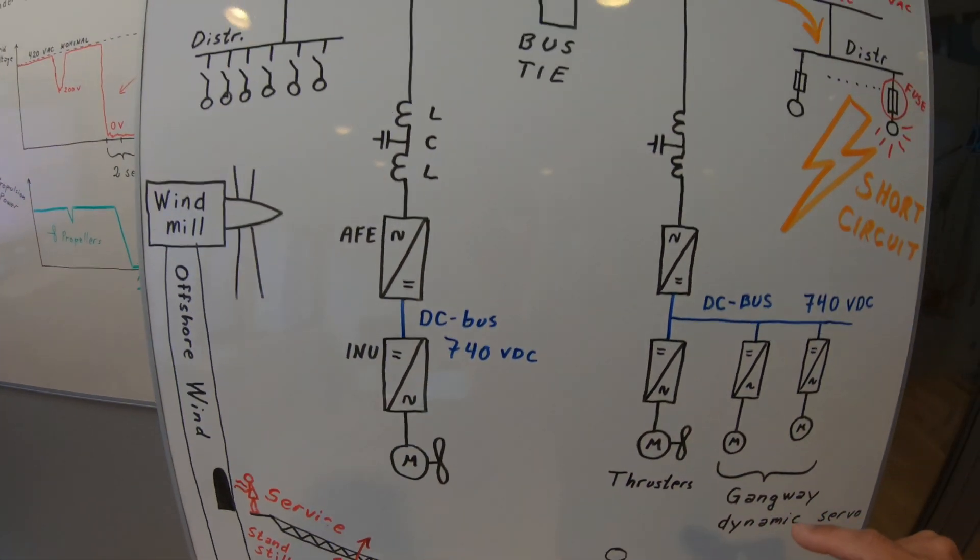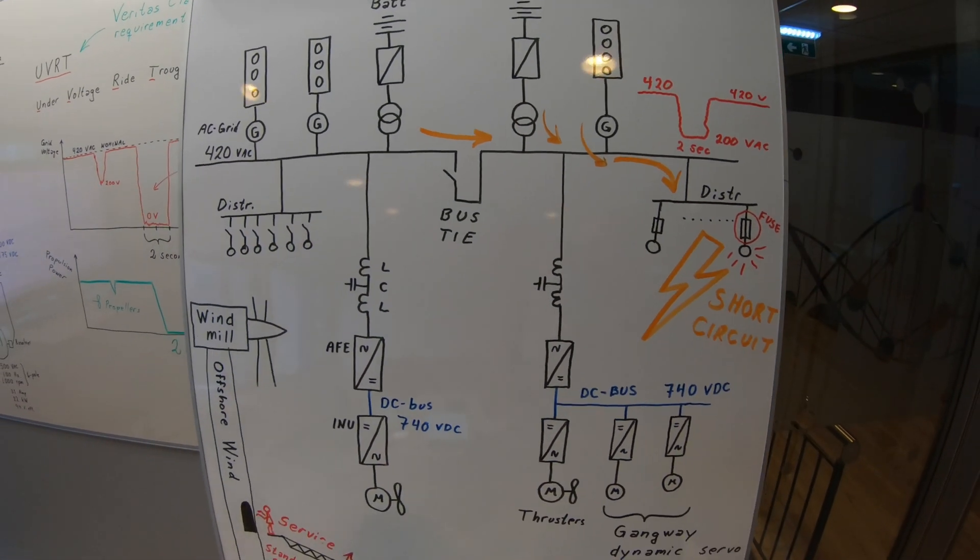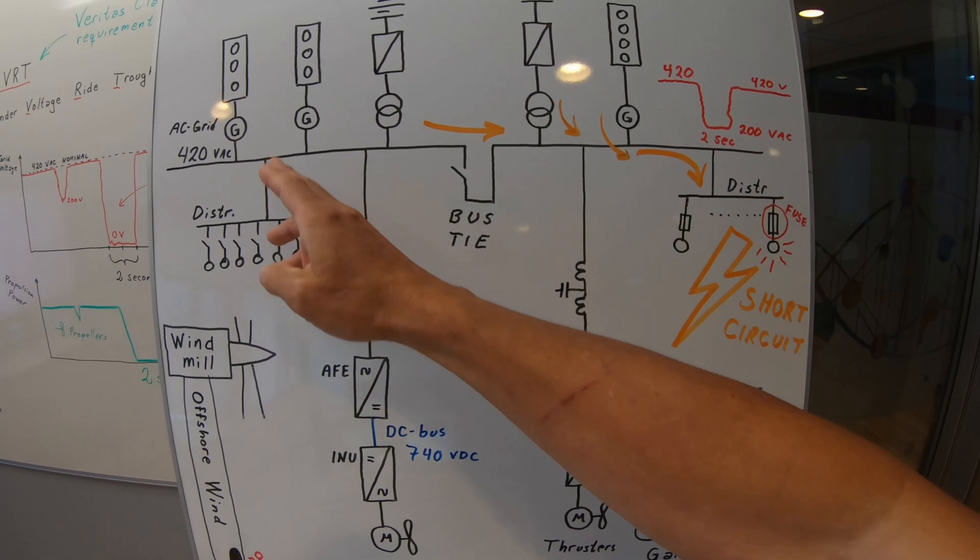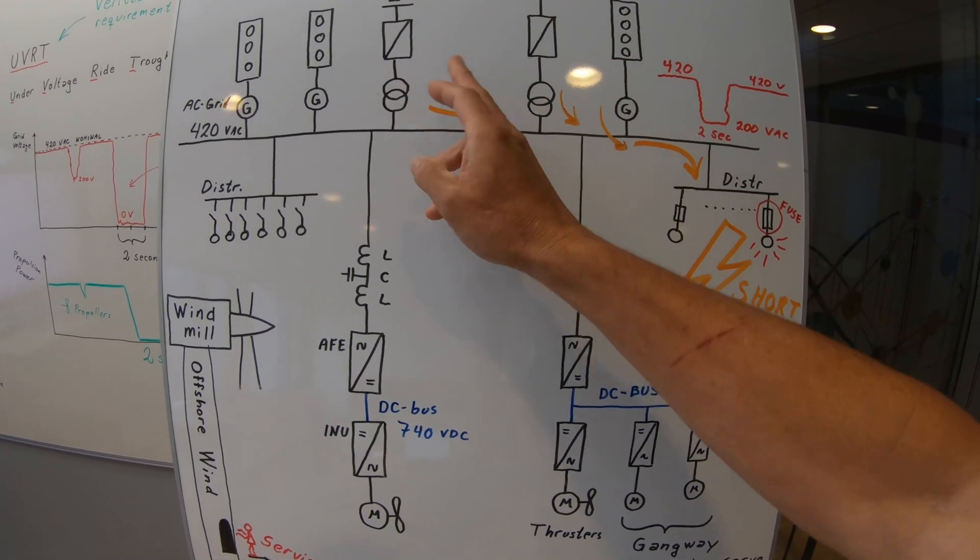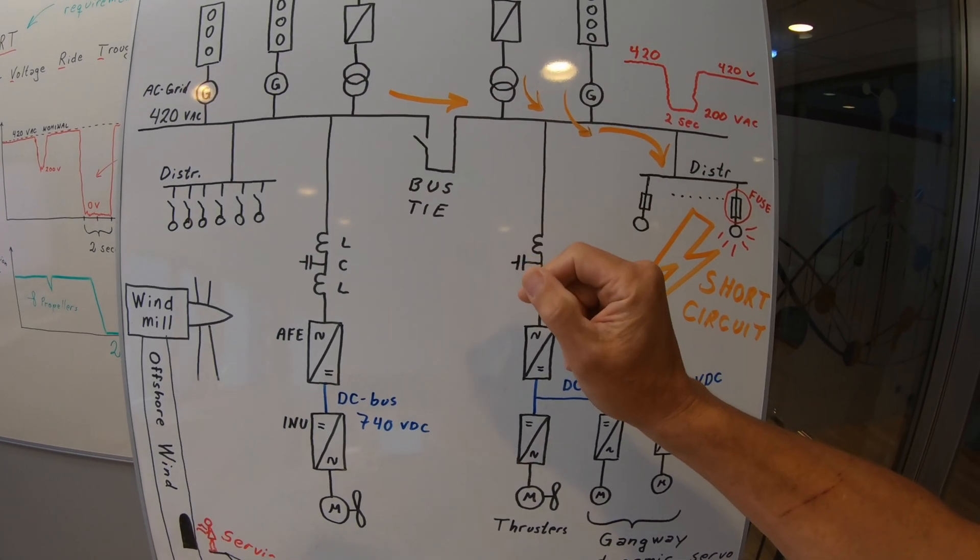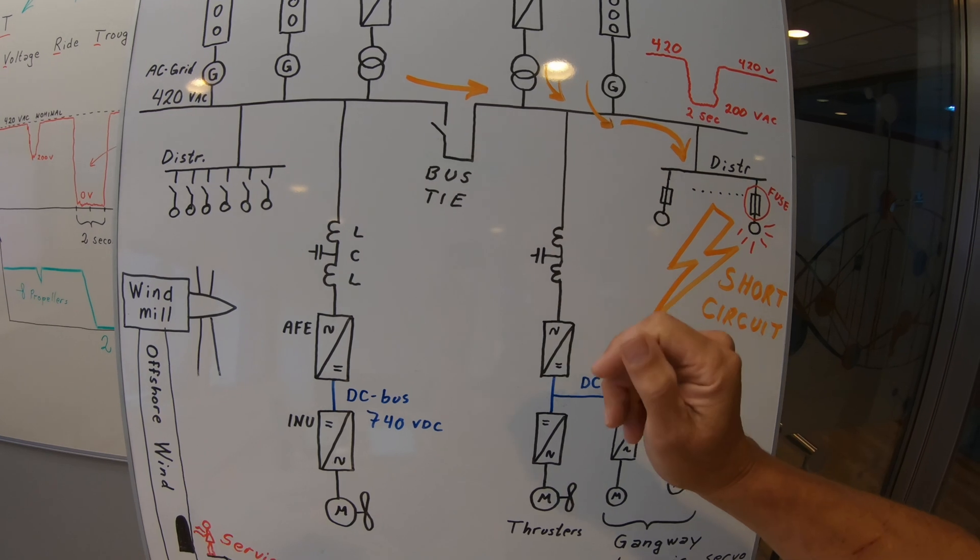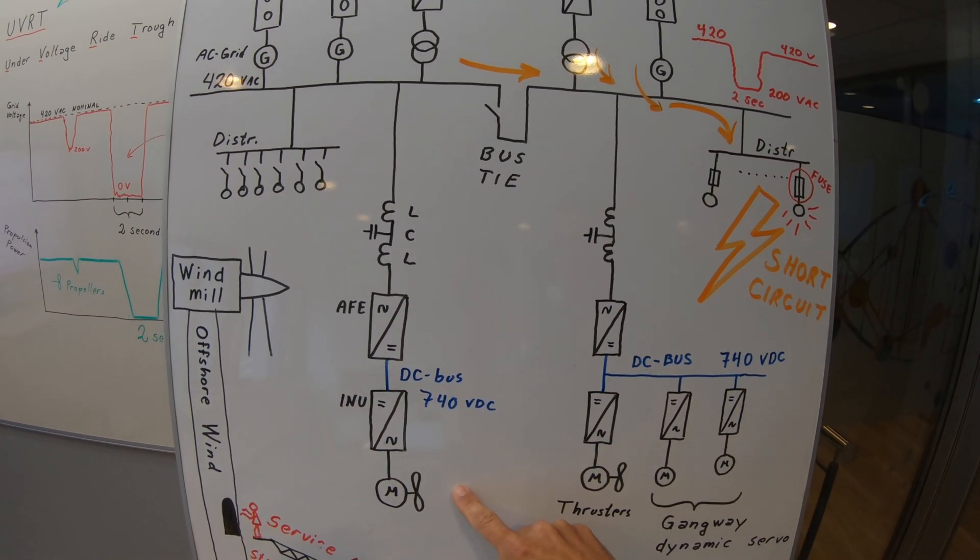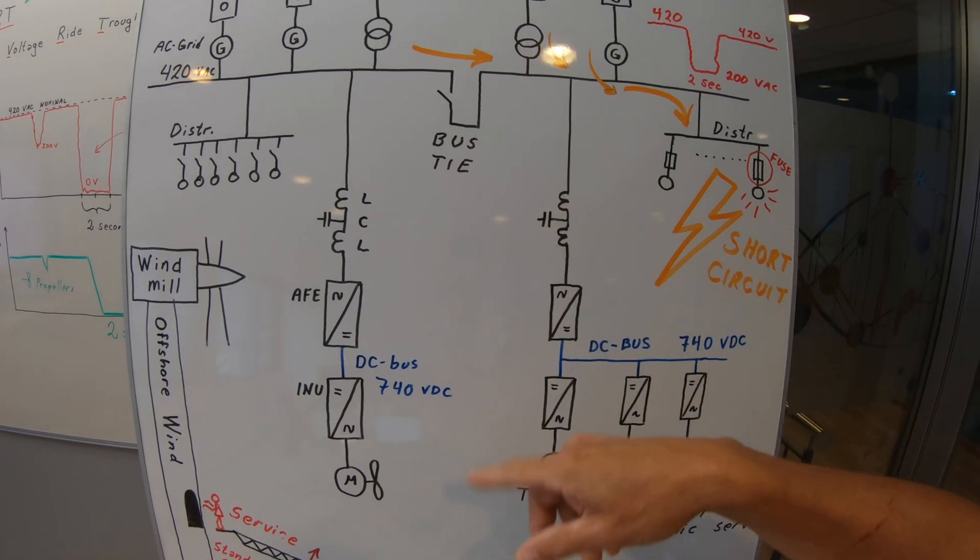However, it is usually powered by an electrical system that maybe looks something like this. You have diesel generators but also battery feeding an AC grid, sometimes also a DC grid system. You have propulsion systems to keep the ship into position that are electrical fed.